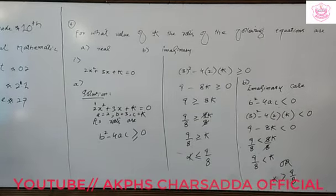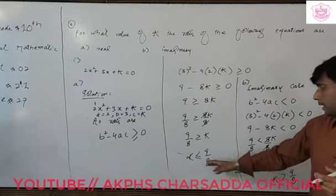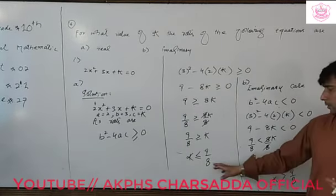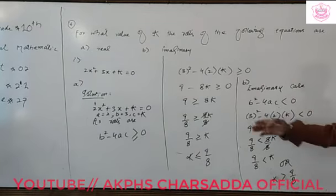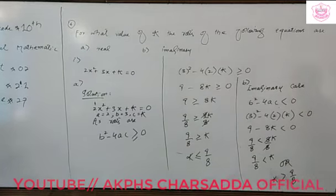So when the roots are real, the k value is less than or equal to 9 by 8. But when the roots are imaginary for this equation, the k value is greater than 9 by 8.